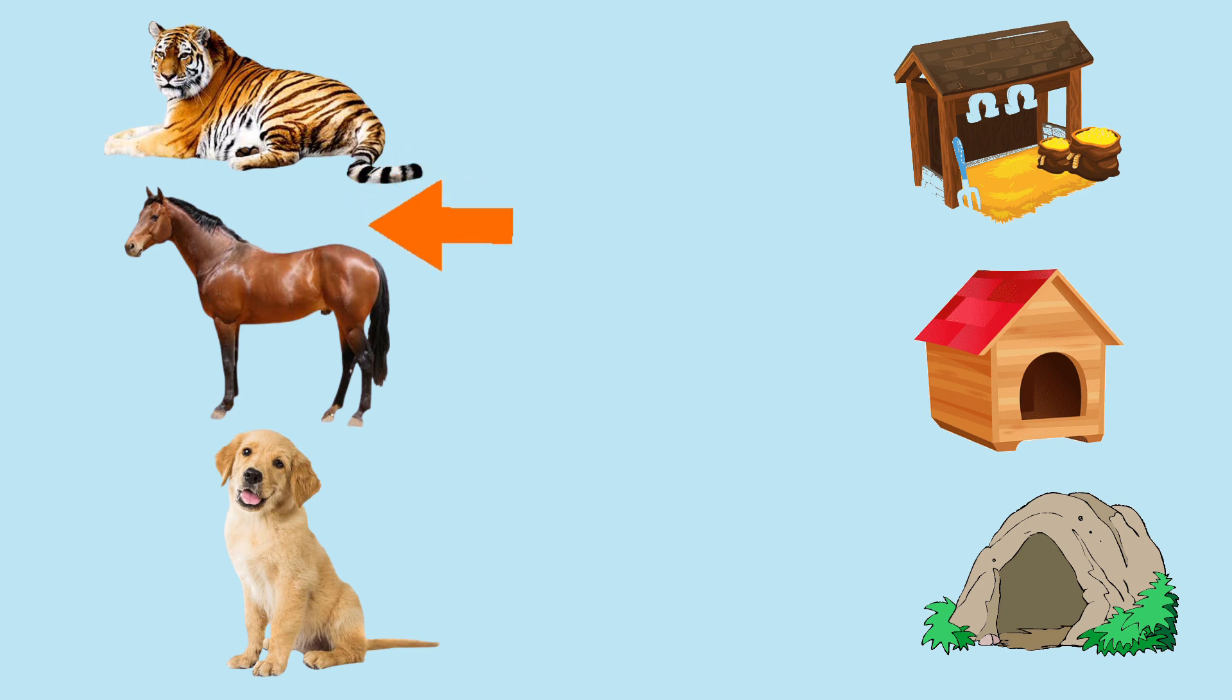Now, we match animal's home. See the picture carefully. First, tiger, horse. Next, tiger, horse, dog. First, tiger. Which place he lives? Yes. Den. So, tiger lives in den.